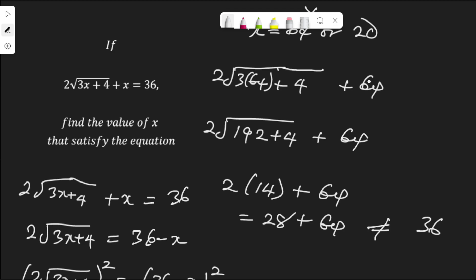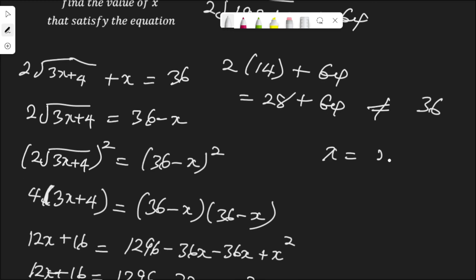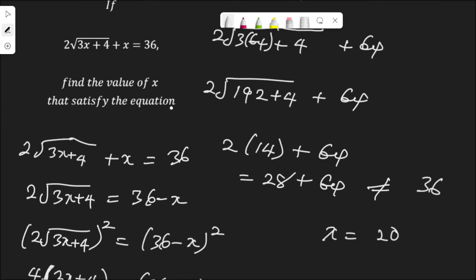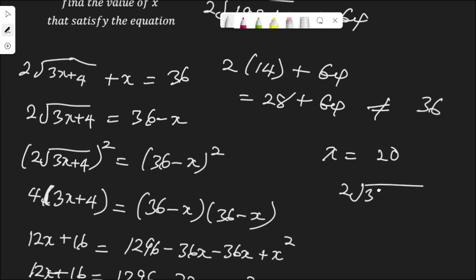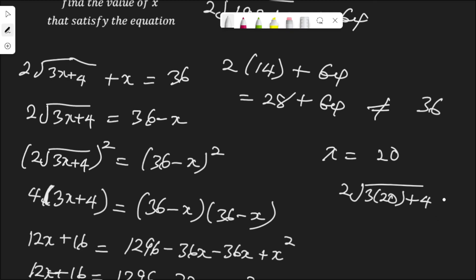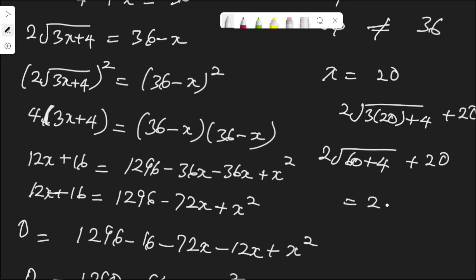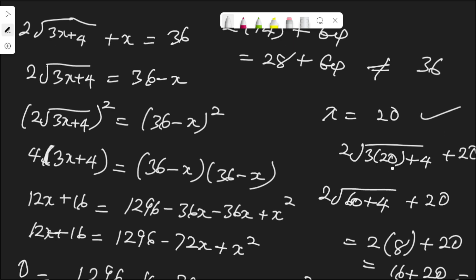Let's check s equals 20. Substituting into 2 root(3s + 4) plus s: 2 root(3 times 20 plus 4) plus 20 equals 2 root(60 plus 4) plus 20 equals 2 root(64) plus 20 equals 2 times 8 plus 20 equals 16 plus 20 equals 36. Therefore s equals 20 is the only solution to this equation.